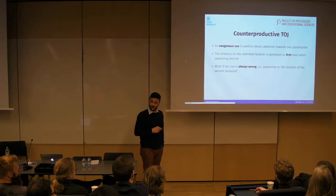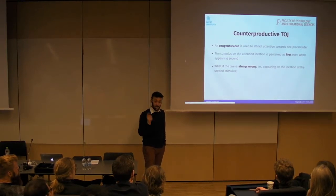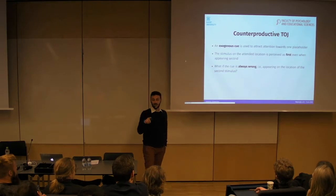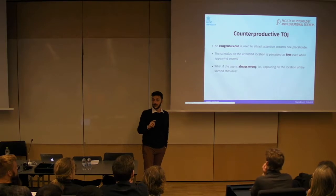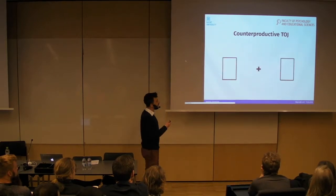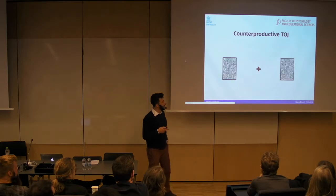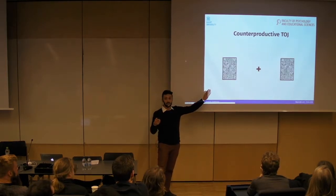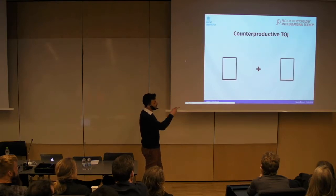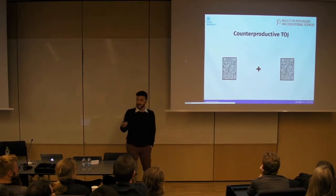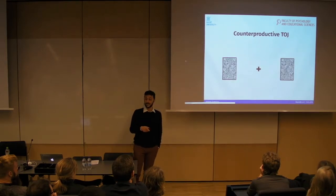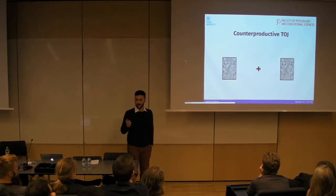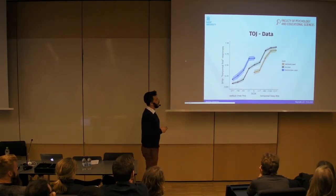The question is: what if the cue is always wrong? What if the cue always appears on the place where the second stimulus will appear, and people know that? For example, you see the cue appearing on your left, but the first target appears on the other side. The correct answer is to say the horizontal lines appeared first — but will people say the vertical lines appeared first just because their attention was automatically oriented towards the cue, even if they know the cue is always wrong? It seems like it.